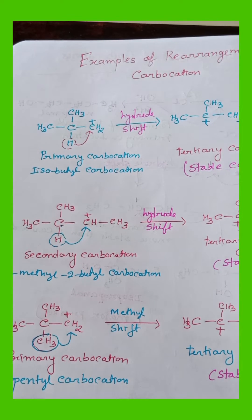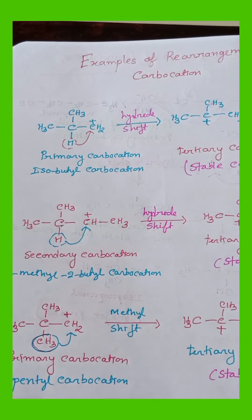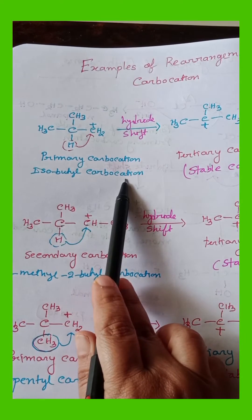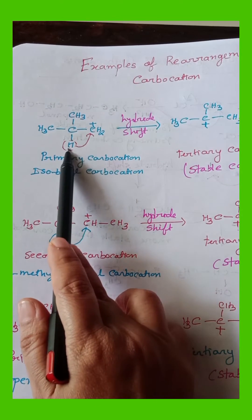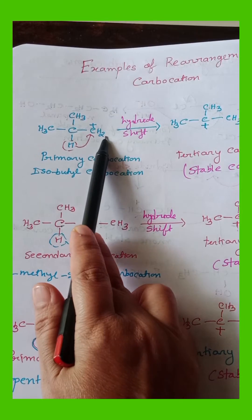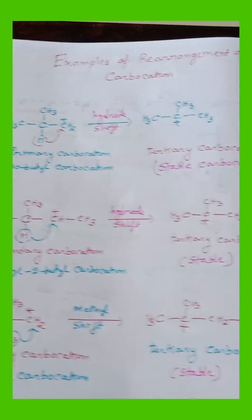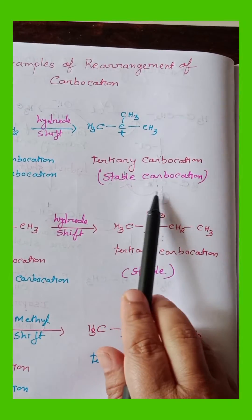And this rearrangement of carbocation takes place due to hydride shift or methyl shift. This is isobutyl carbocation. It is a primary carbocation. When this beta-hydrogen shift is taking place, we are getting tertiary carbocation which is more stable.